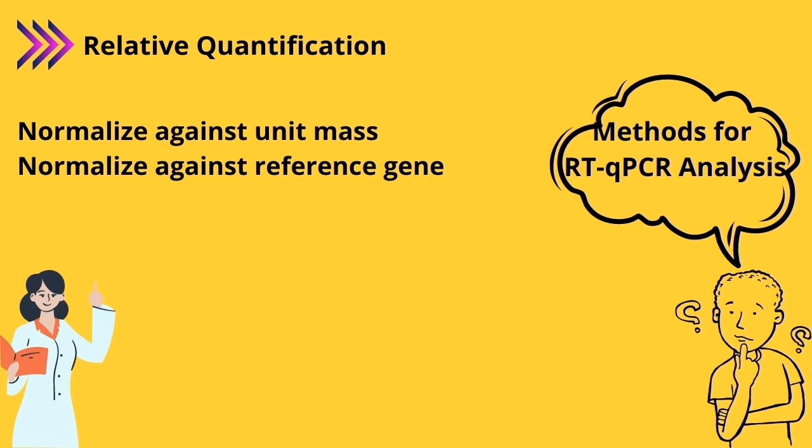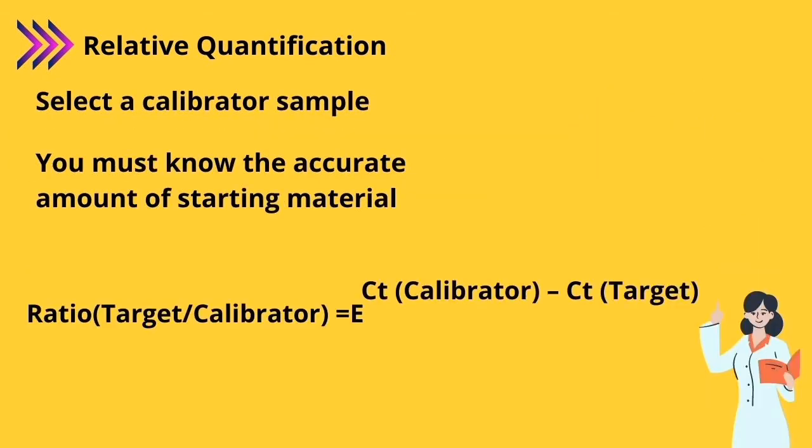If you want to normalize based on unit mass, you must select a sample as calibrator and compare the expression of your target gene with it, and then calculate ratio. Note here, to perform this method, you must measure starting amount of RNA that is added to your reaction.